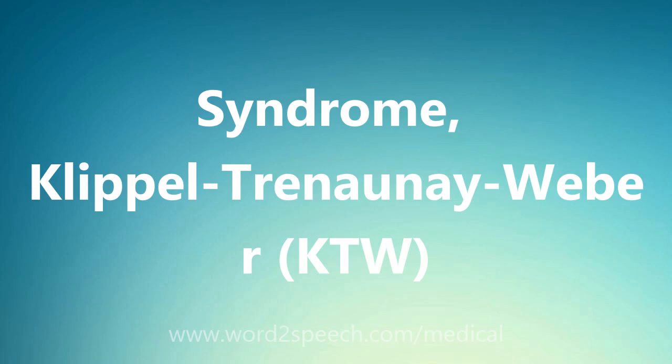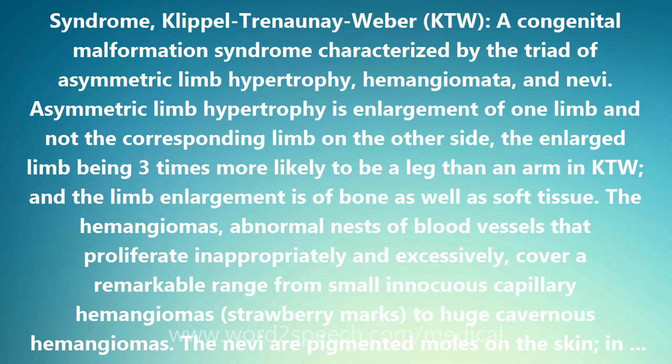Klippel-Trénaunay-Weber (KTW) is a congenital malformation syndrome characterized by a triad of asymmetric limb hypertrophy, hemangiomas, and nevi. Asymmetric limb hypertrophy is the enlargement of one limb and not the corresponding limb on the other side. The enlarged limb is three times more likely to be a leg than an arm in KTW, and the limb enlargement involves both bone and soft tissue.